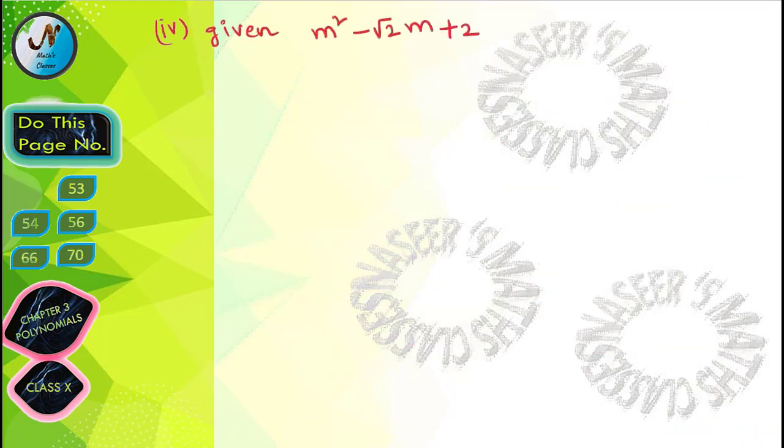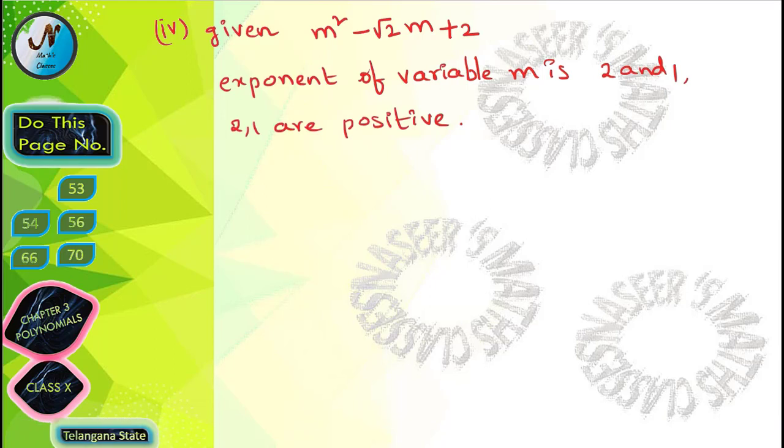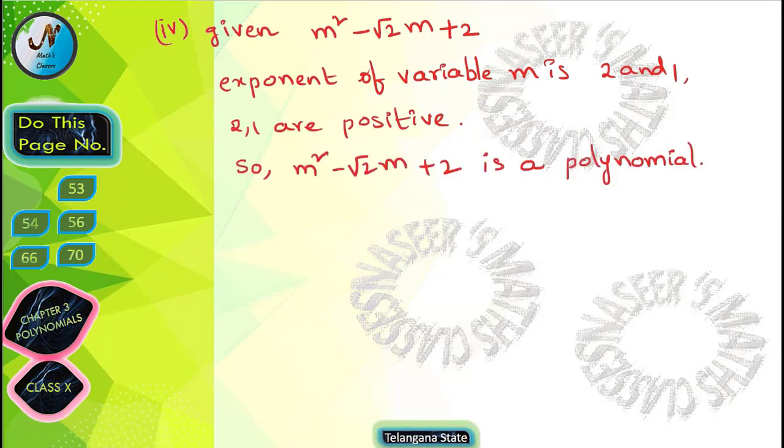Next fourth one given that m² - √2m + 2. Here variable is m, exponent of the variable m is 2 and 1. So 2 comma 1 are positive numbers. That's why m² - √2m + 2 is a polynomial.